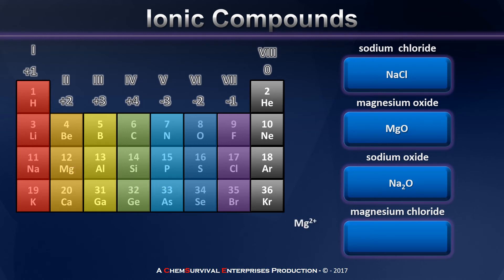In the case of magnesium chloride, we see that magnesium tends to have a two plus charge and therefore gives up two electrons, but chlorine atoms can only accept one each. Consequently, we need a second chloride ion, making the overall formula for this ionic compound MgCl2.